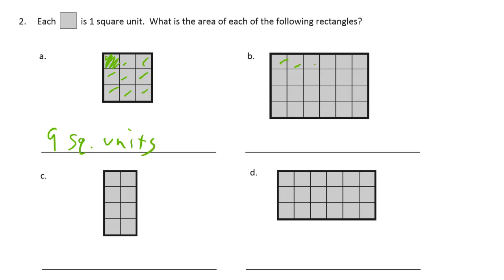B is one, two, three, four, five, six, seven, eight, nine, ten, eleven, twelve. Let's see — that's 10, that's 10, so that's 20. And then there's these four — 24 square units.